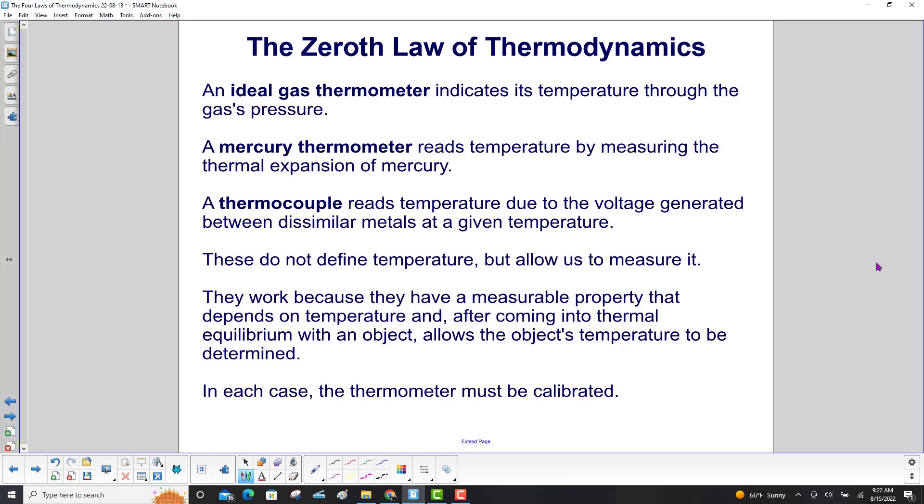Here are some thermometers that use different properties to measure temperature. An ideal gas thermometer indicates its temperature through the gas's pressure. A mercury thermometer reads temperature by measuring the thermal expansion of mercury. A thermocouple reads temperature due to the voltage generated between dissimilar metals at a given temperature.